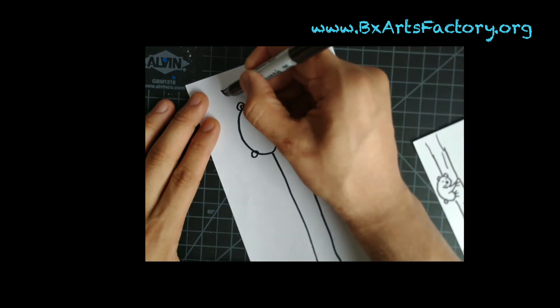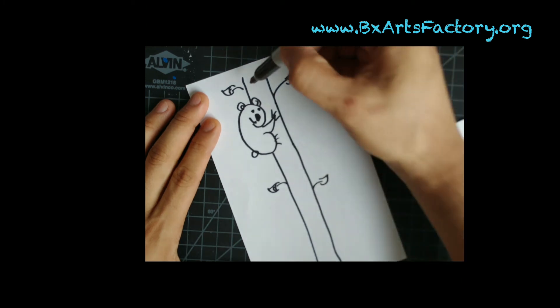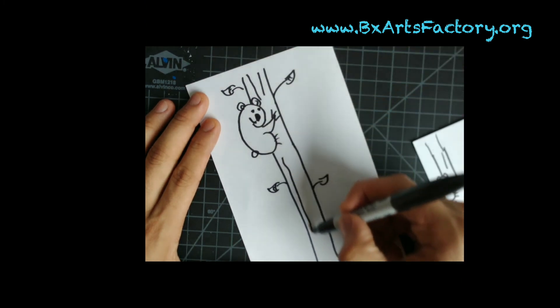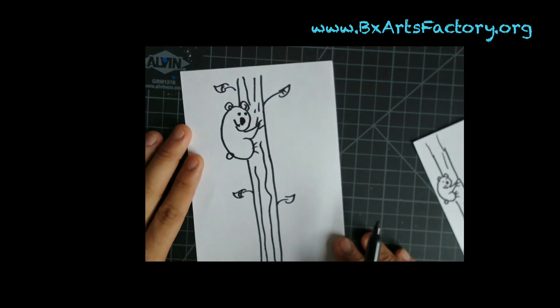Same thing. You add some leaves for some nice detail. And some wavy lines for the bark. And then you're free to color your picture however you want.